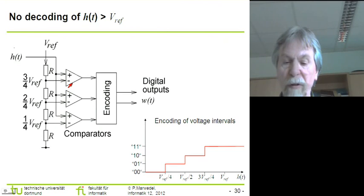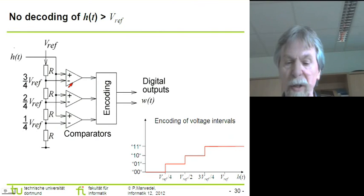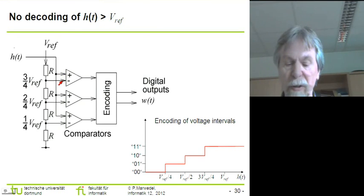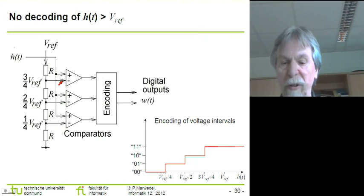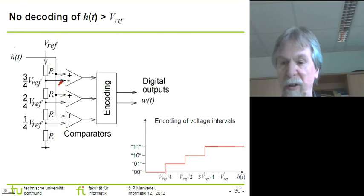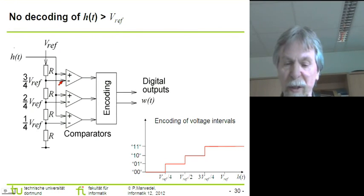Then we have circuits called comparators. These comparators will generate a logical one signal if the voltage at the positive input is exceeding the voltage at the negative input, and a logical zero otherwise. Since there is always some noise on these input signals, we don't really have to discuss the case where voltages are equal, because they are never really 100% equal.